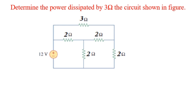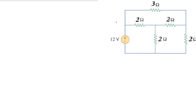First, we will consider nodes V1, V2, and V3. We will consider node 1 at this place, node 2, and node 3. Here is the reference node, or zero potential node. We will assume voltage V1 at node 1, V2 at node 2, and V3 at node 3.